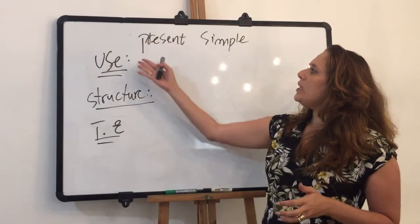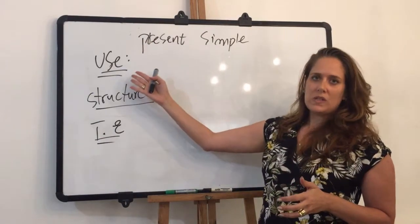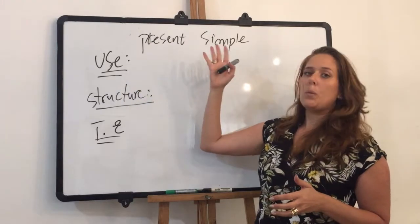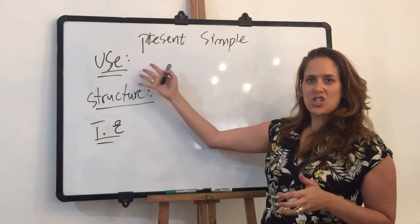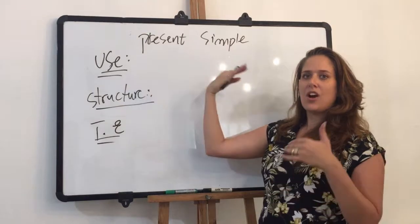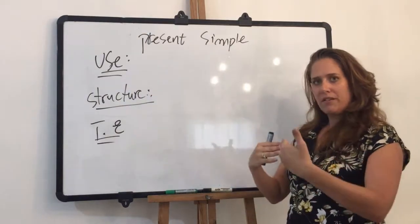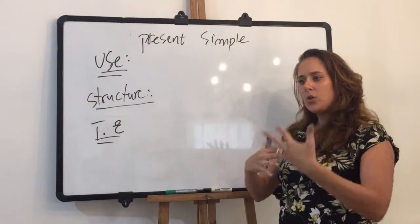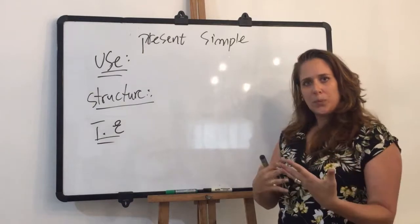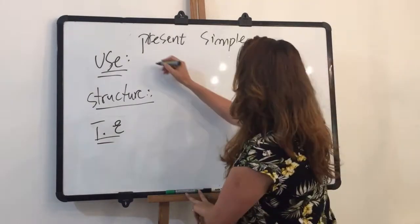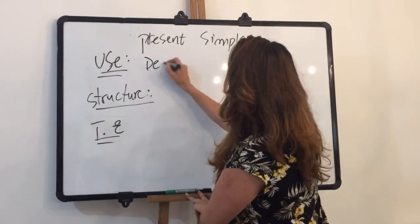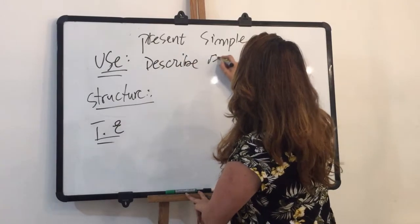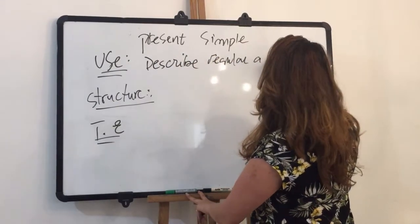What is the use? When do I use the present simple? We use the present simple when we want to talk and describe actions that are repeated, that are repetitive — something regular, something that you always do. So we describe regular actions.